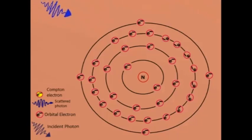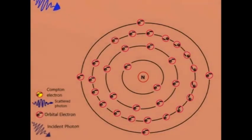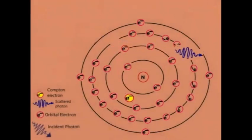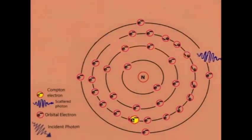In Compton effect, an incoming X-ray or gamma-ray photon interacts with an orbital electron. Part of the incident photon energy is absorbed by the electron and the remaining energy appears as a scattered photon. The scattered photon has less energy or higher wavelength than the incident photon.